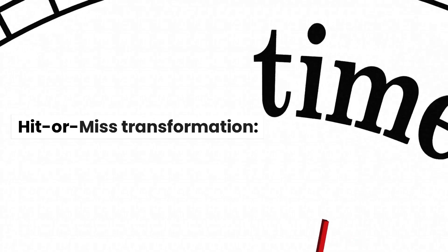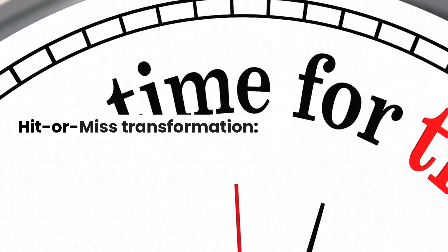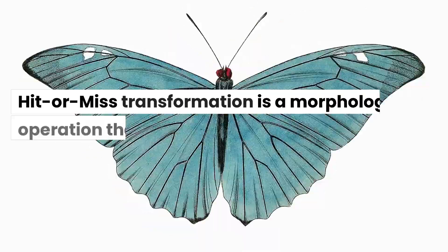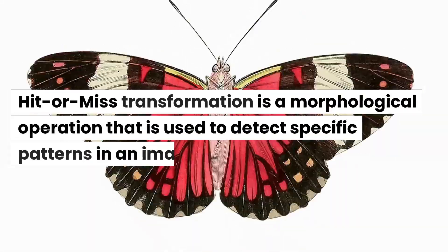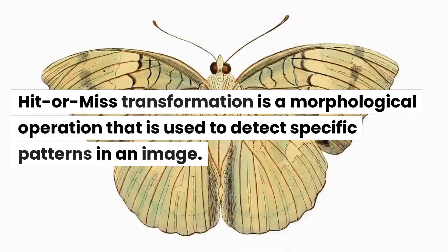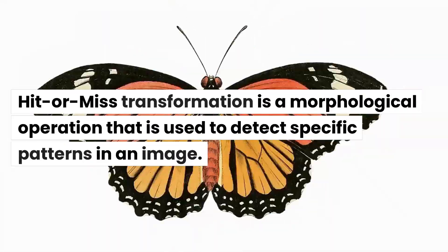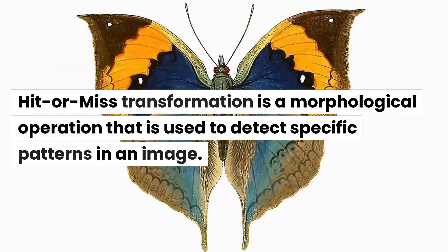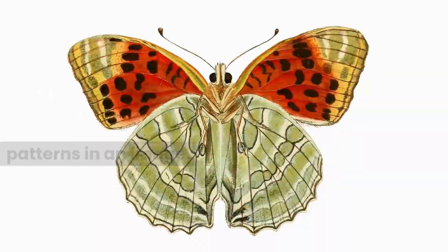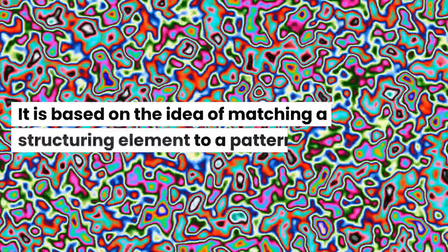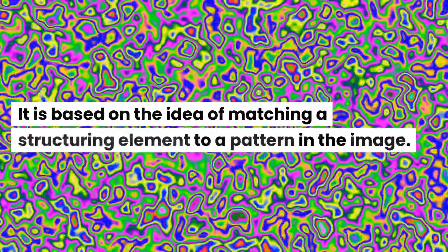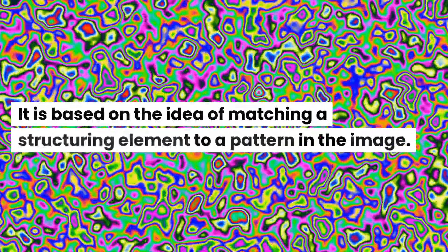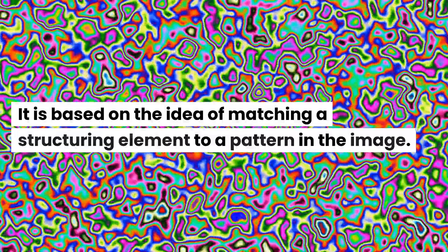Hit or miss transformation is a morphological operation used to detect specific patterns in an image. It is based on the idea of matching a structuring element to a pattern in the image.